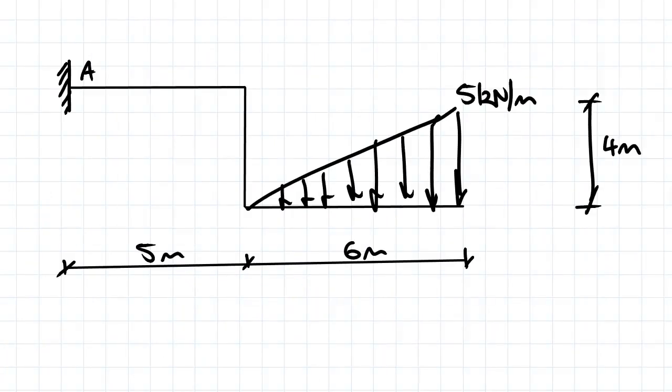So let's have a look at a quick question. So we've got here a beam with a fixed support here at A, and a triangular distributed load of 5 kilonewtons per metre max. And we've got our links here.